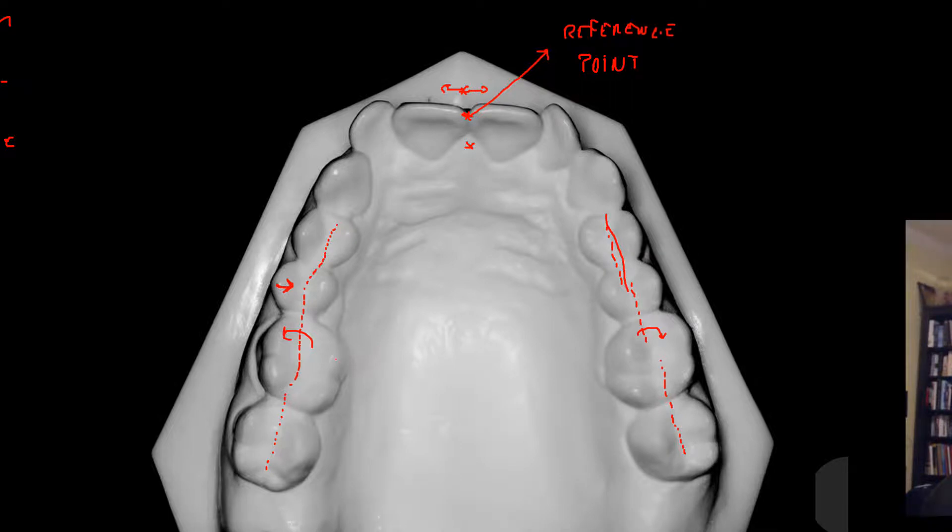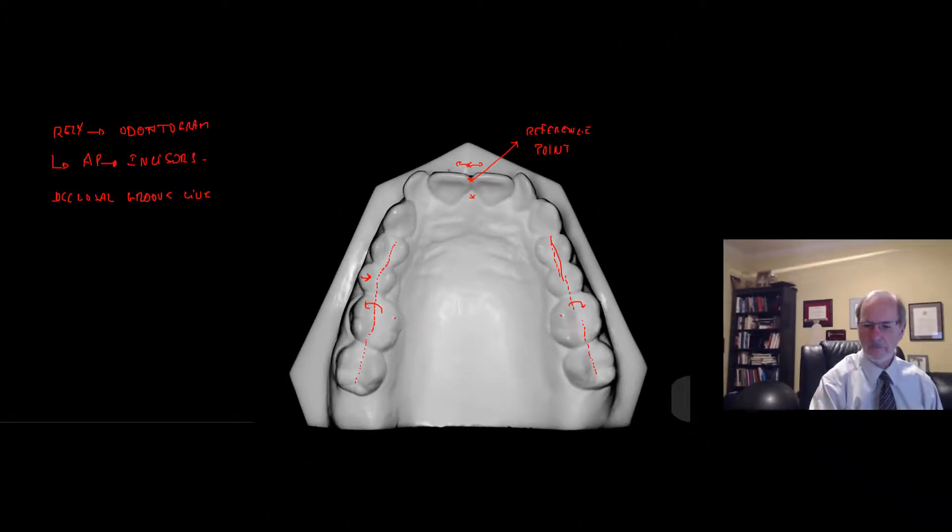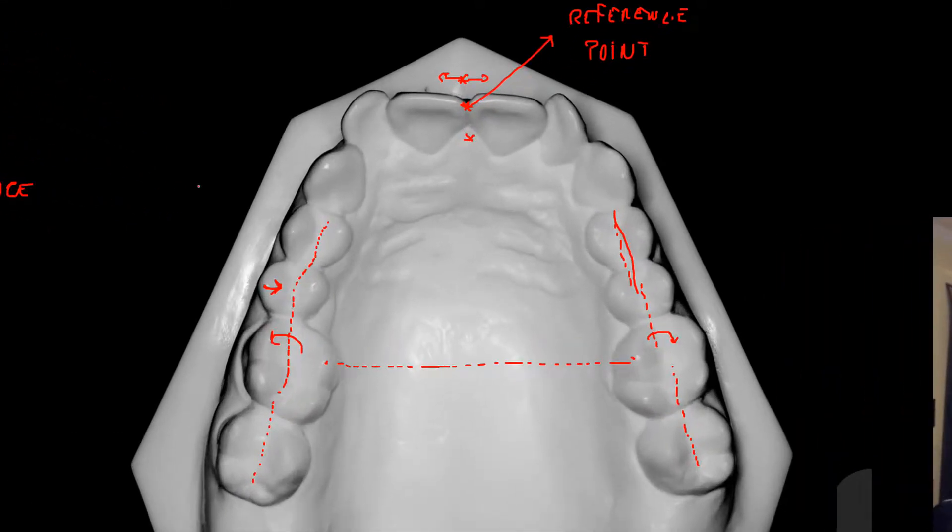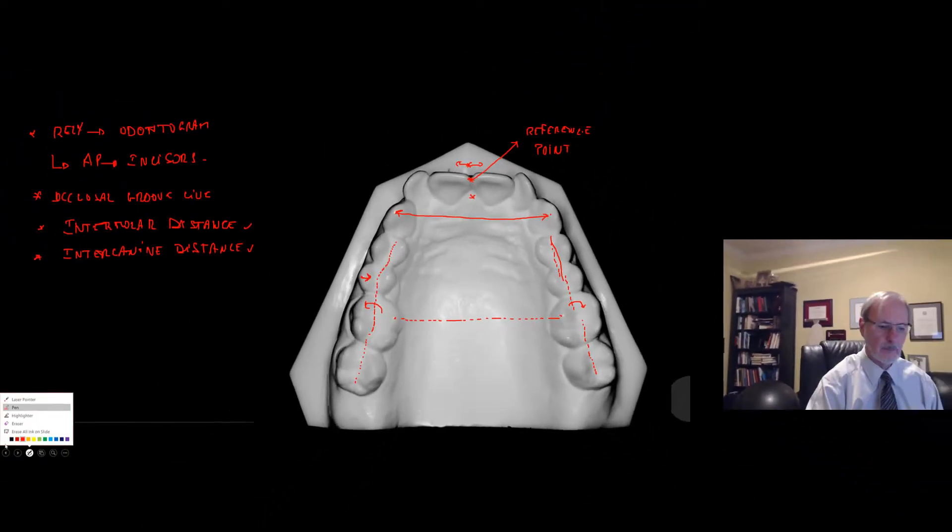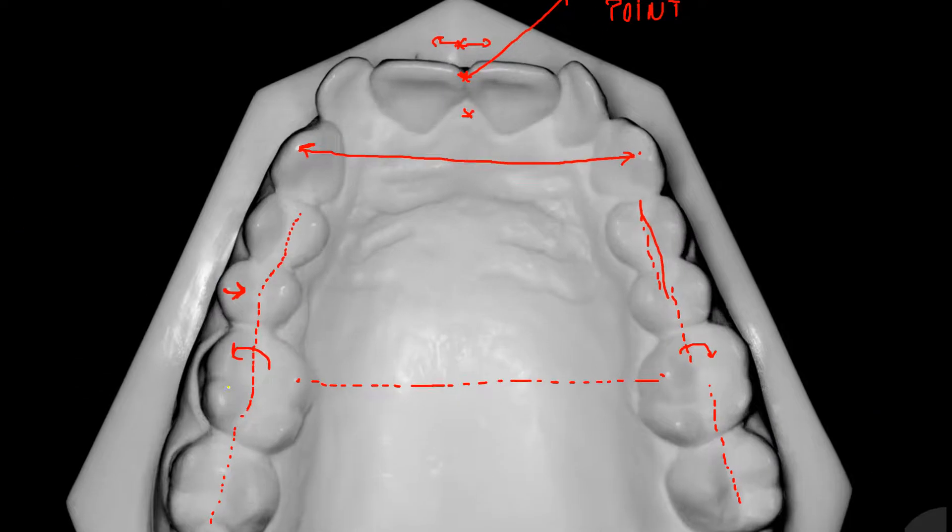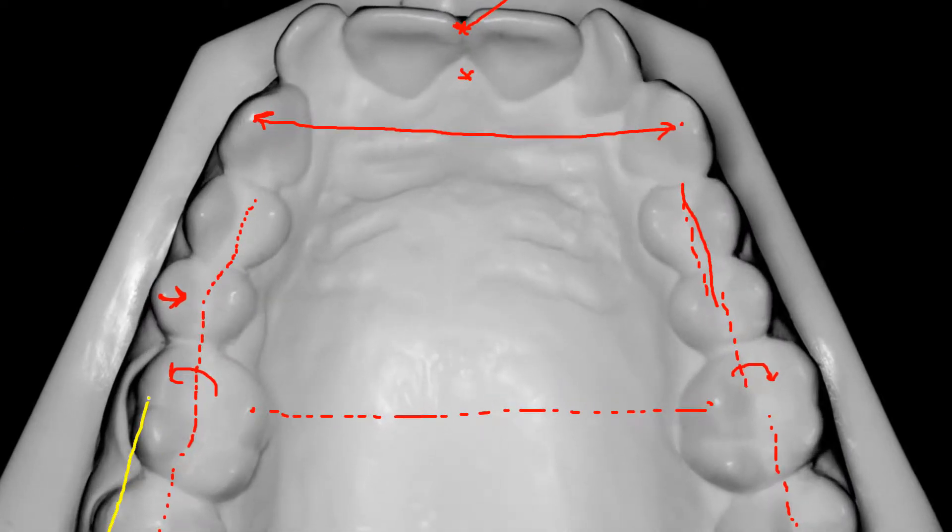Then you must decide, especially for kids, the intermolar distance. And obviously, the intercanine distance, which has been studied extensively in orthodontics. Some orthodontists say you cannot change intercanine distance. Some say you should be able to do pretty much what you want because the buccal plate can respond to slight or light orthodontic forces. But it's very important for you to understand the implications of what you are going to be doing.